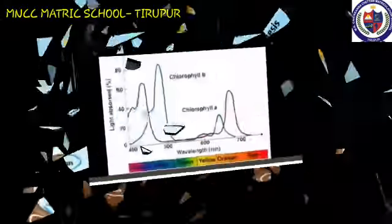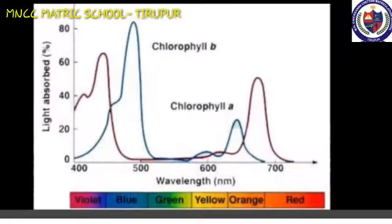Photosynthetic pigments are of two classes, namely the primary pigment and accessory pigments. In photosynthesis, chlorophyll A is the primary pigment. Other pigments such as chlorophyll B and carotenoids are called accessory pigments.